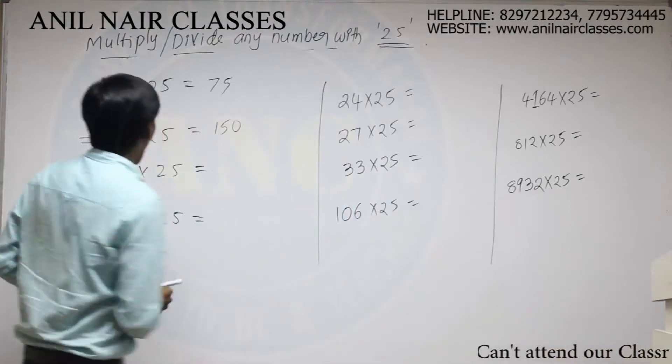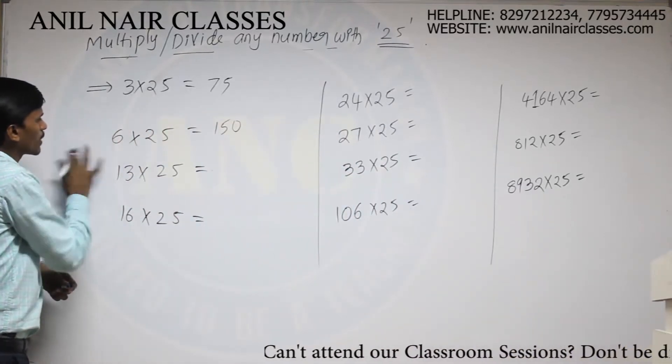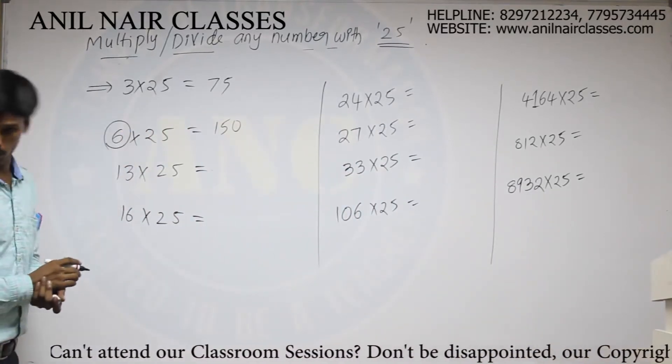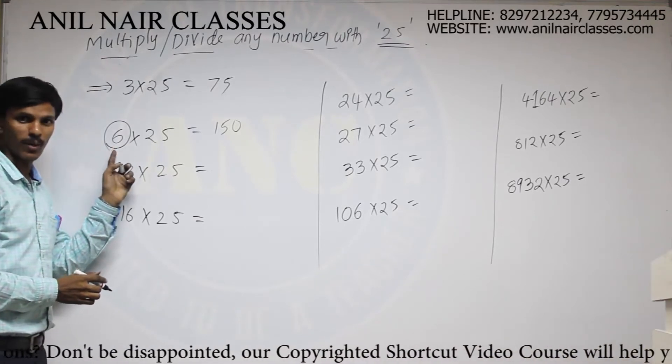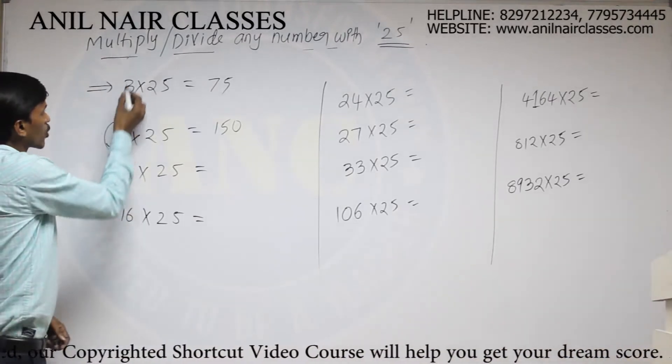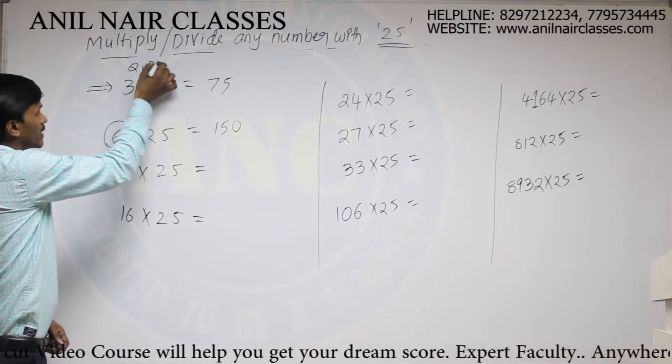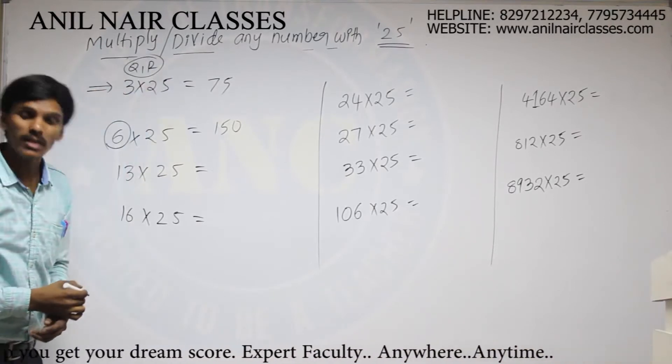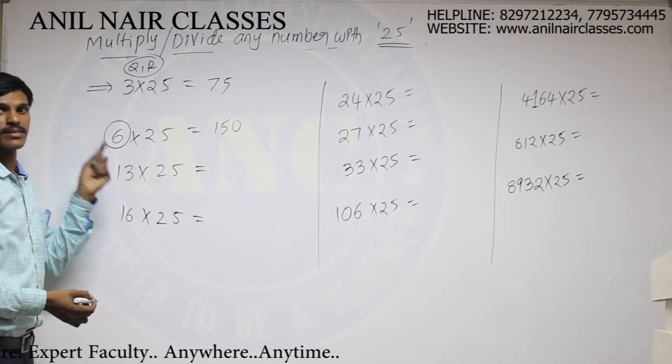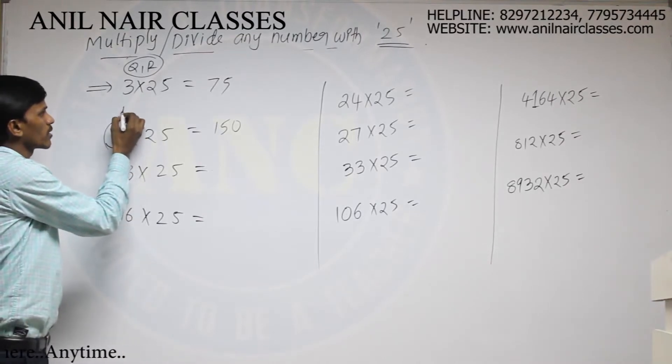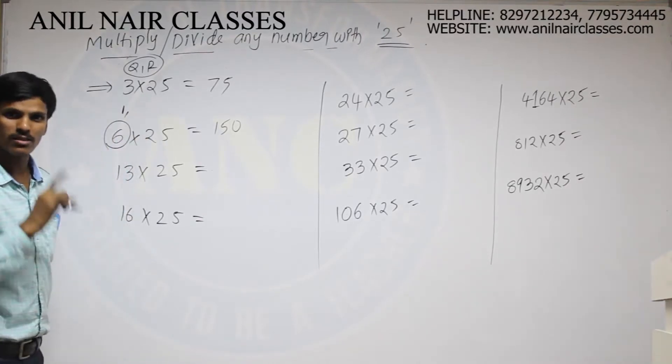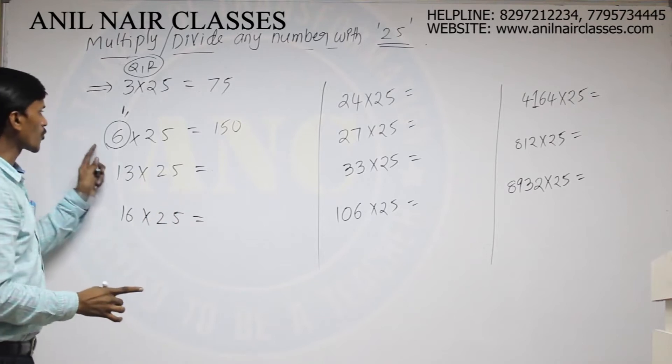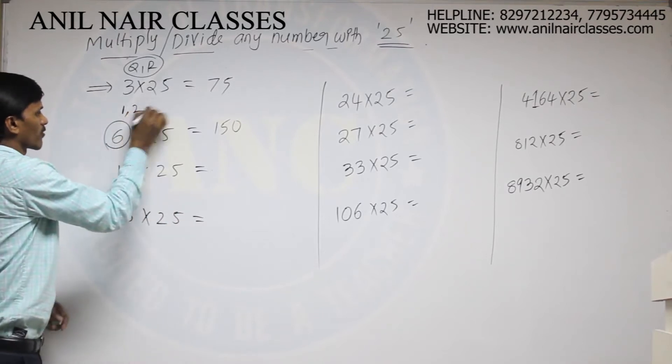We will see now. Always divide this multiplication number with 4 and write the coefficient and remainder. For suppose, I am dividing 6 with 4. What is the coefficient? How many times it will get cancelled? That will be called as coefficient. So, 4×1 are 4. Remainder will be 2.